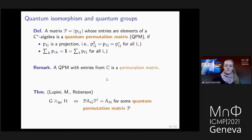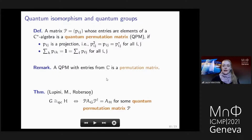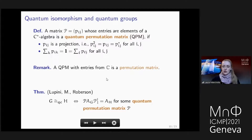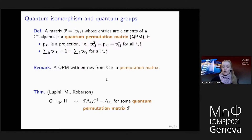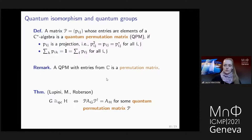With these quantum permutation matrices, we obtain a characterization that says: two graphs are quantum isomorphic if and only if we can find a quantum permutation matrix P that conjugates the adjacency matrix of one graph to that of the other. Syntactically this looks exactly the same as our matrix characterization of graph isomorphism — just instead of requiring the existence of a permutation matrix, we allow for quantum permutation matrices, and that gives you quantum isomorphism.